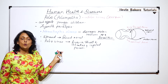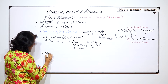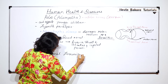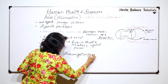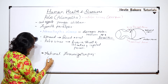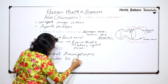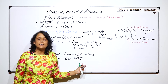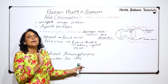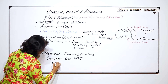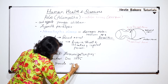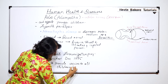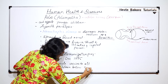The Pulse Polio program was a national immunization program which was launched in December 1995. The program was to provide the polio vaccine to every child below the age of 5.